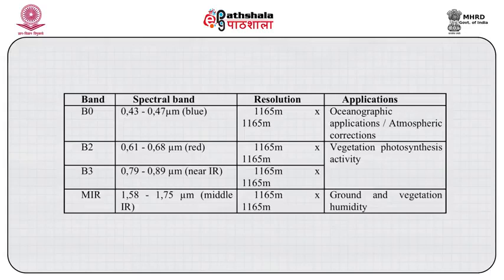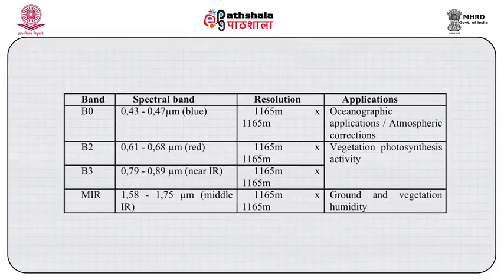Come to the vegetation sensor of SPOT. It has bands B0, B2, B3, and MIR. The spectral band for B0 is 0.43–0.47 (blue). Spectral band for red is 0.612–0.68. Spectral band for near infrared is 0.79–0.89. The spectral resolution for middle IR is 1.58–1.75. The spatial resolution for all bands is 1165 × 1165 meters.